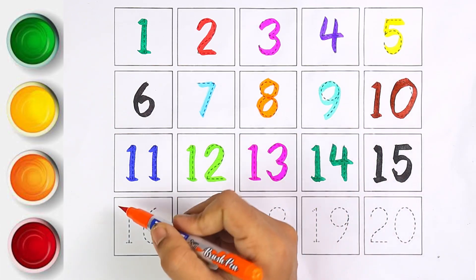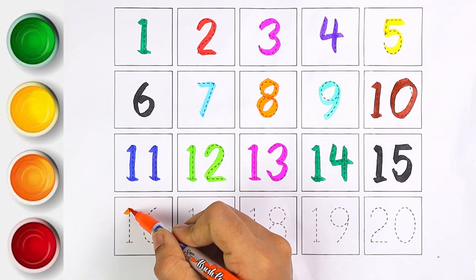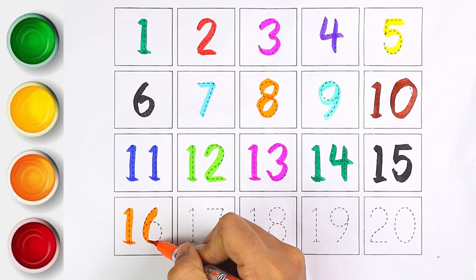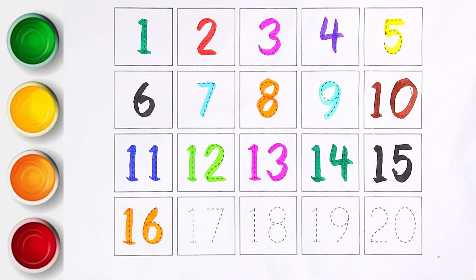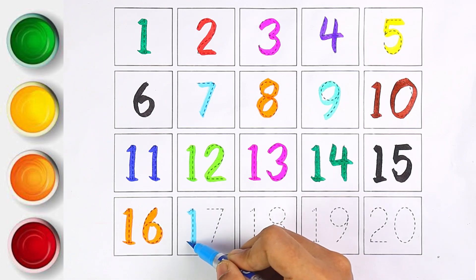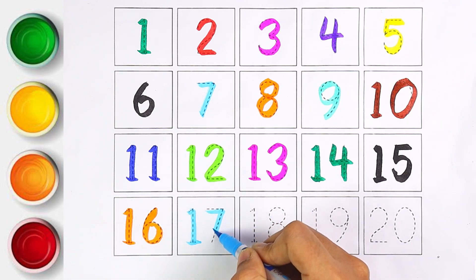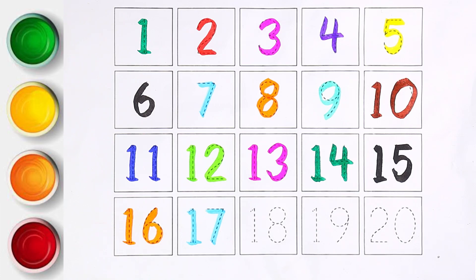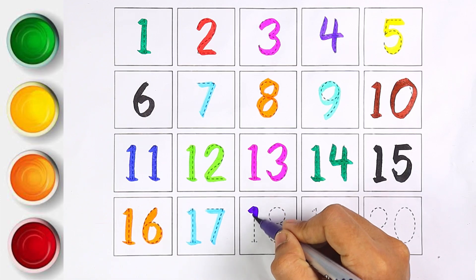That's right — fifteen. Orange color — number sixteen. Blue color — one and seven makes the number seventeen.